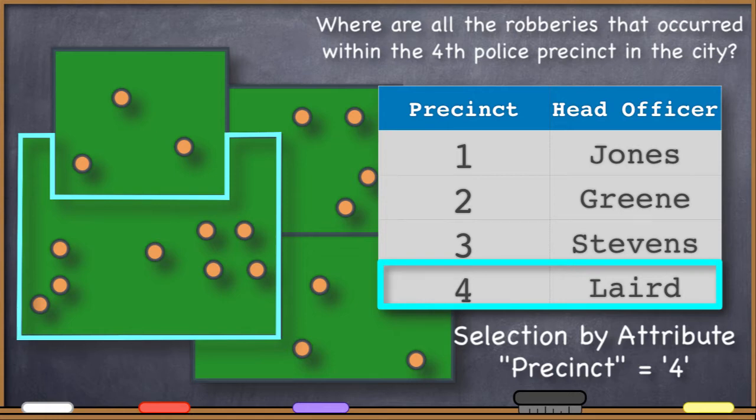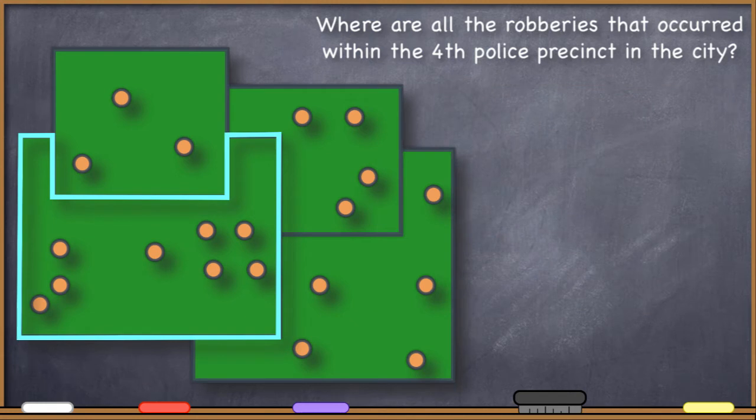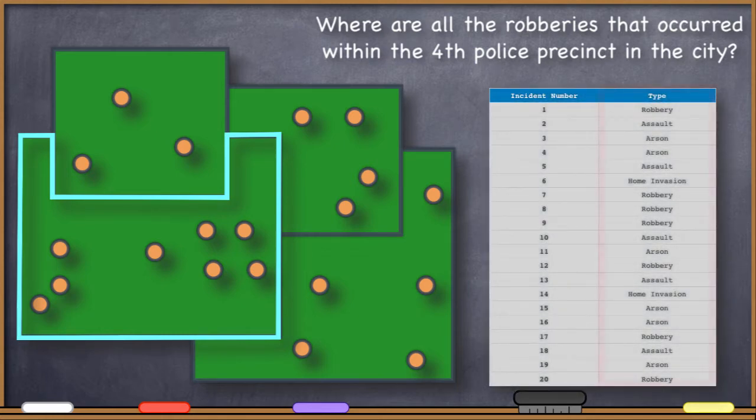Then I also have that point shapefile, or other kind of data file, vector data file, that shows the location of every crime in a certain area, or every crime in the city even. And there's a field in that attribute table that tells me what kind of crime it is.